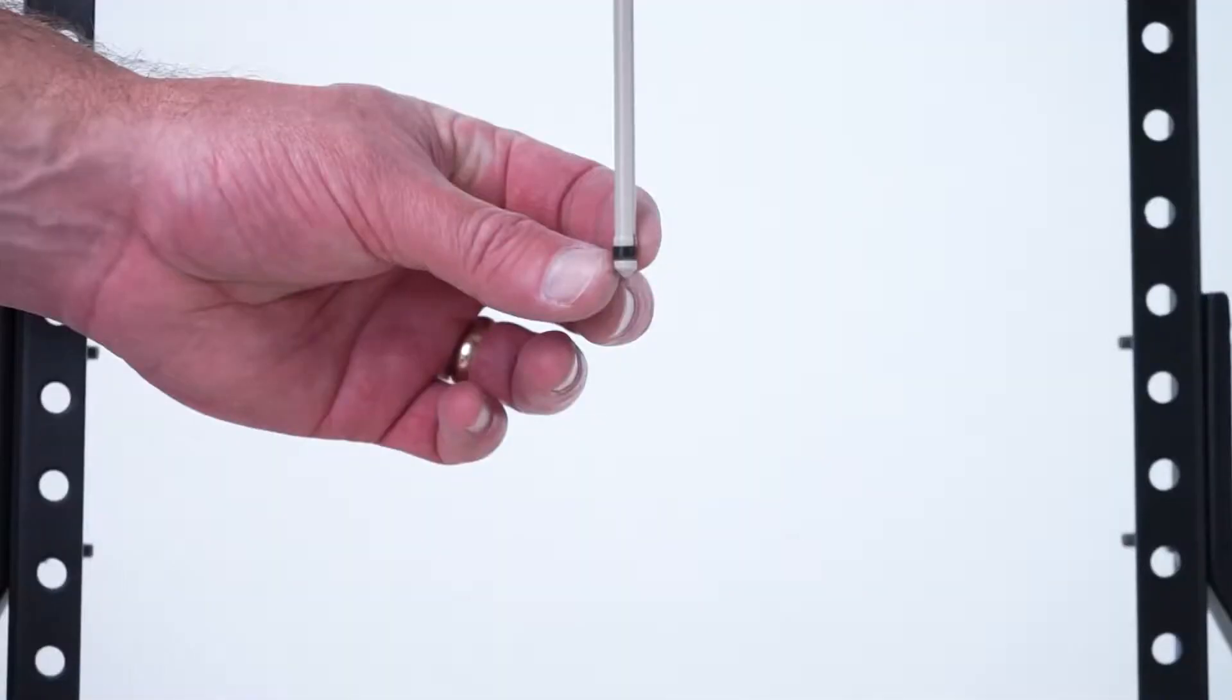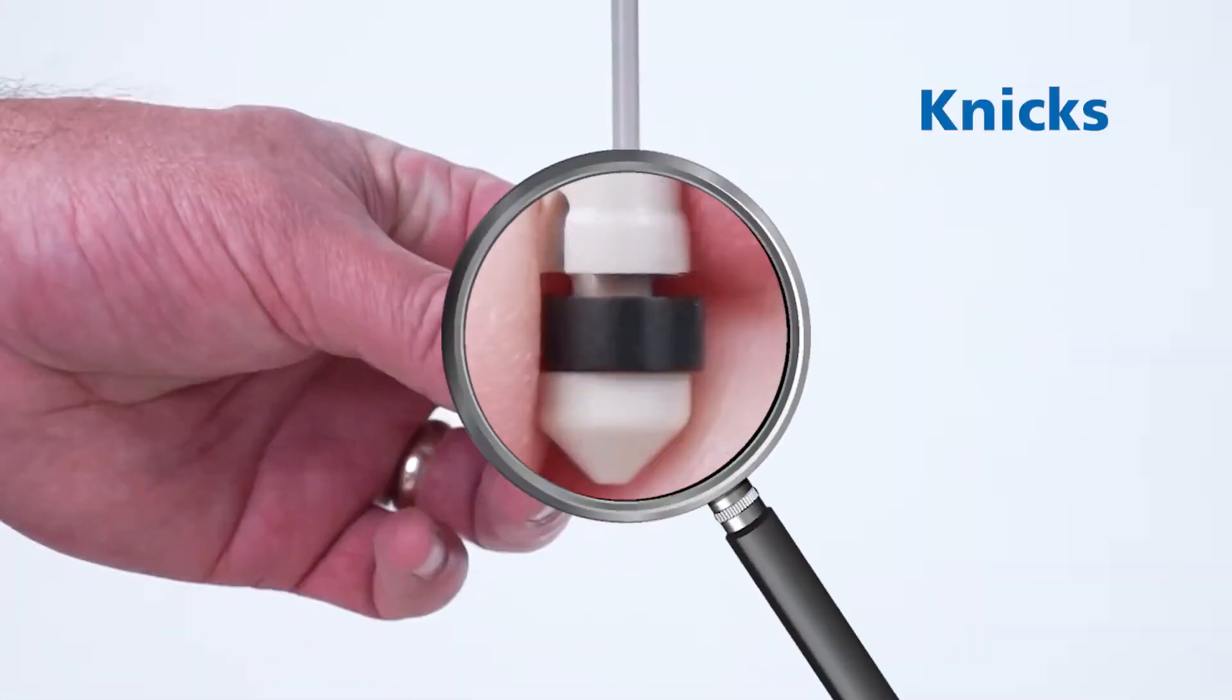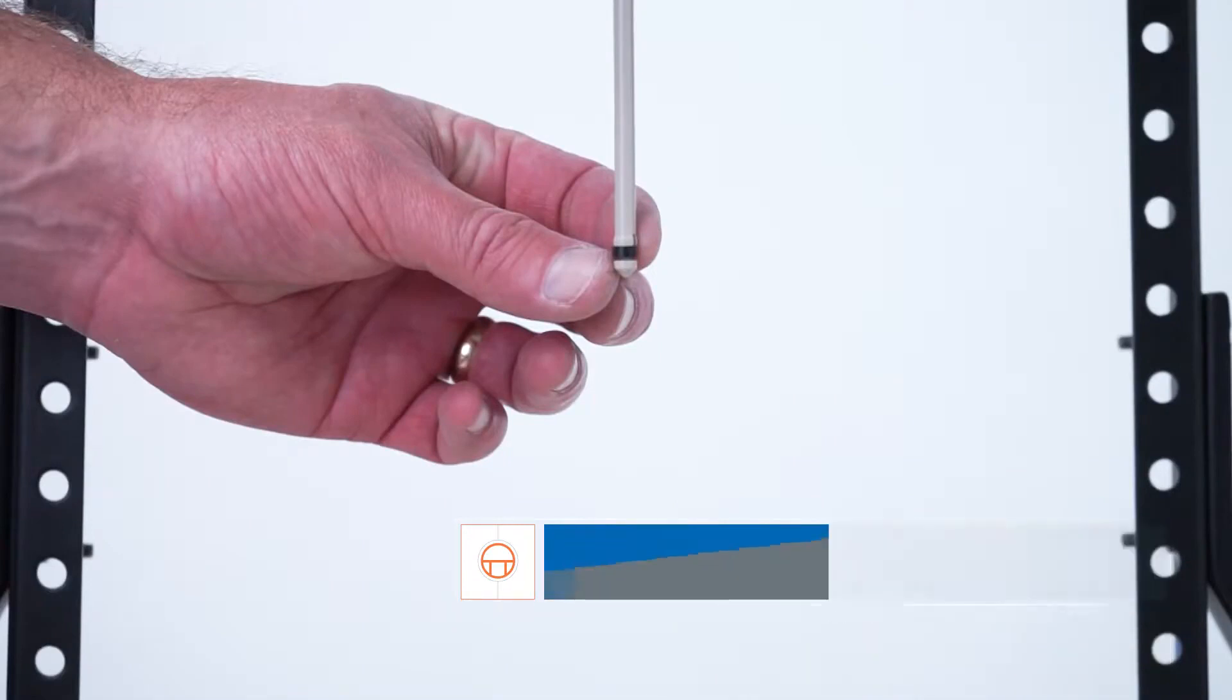Take a close look at the plunger rod and seal. Make sure the rod is straight and that the seal is free of nicks, scratches, or wear. If the plunger or seal is damaged or you don't remember the last time you changed it, just replace the plunger assembly now.